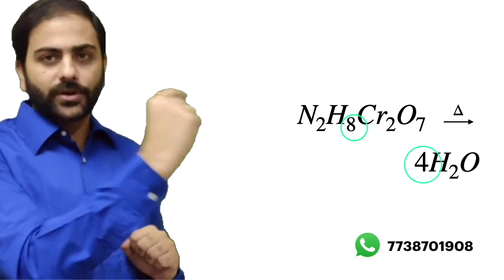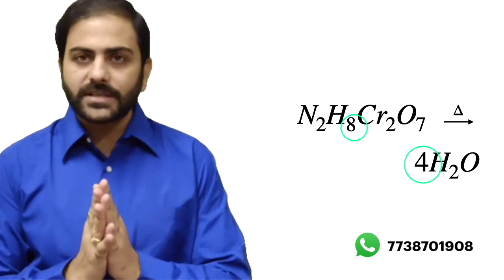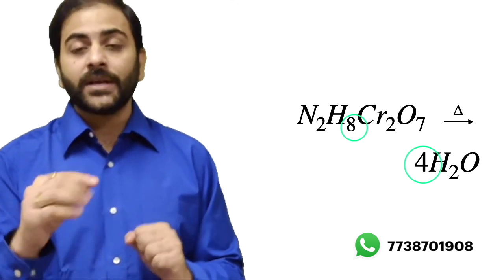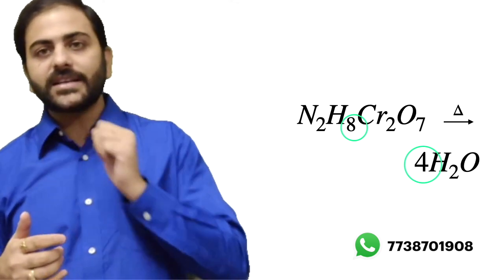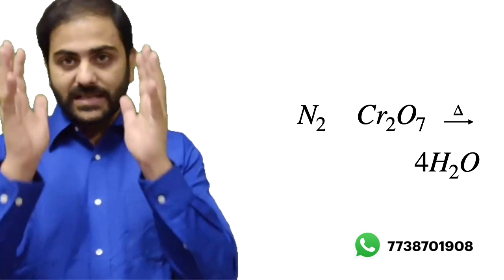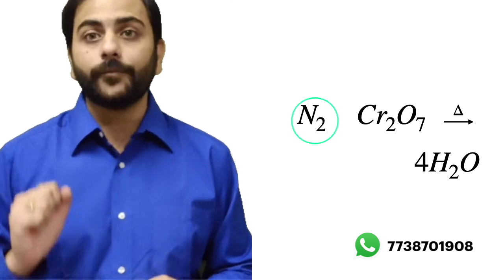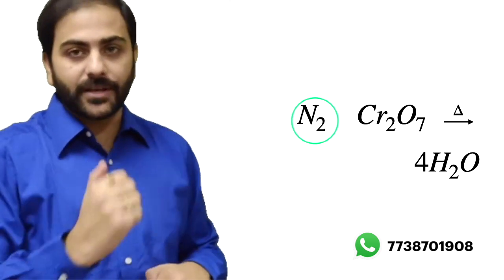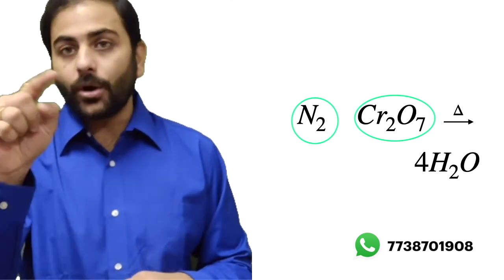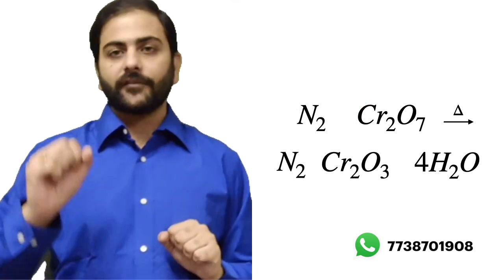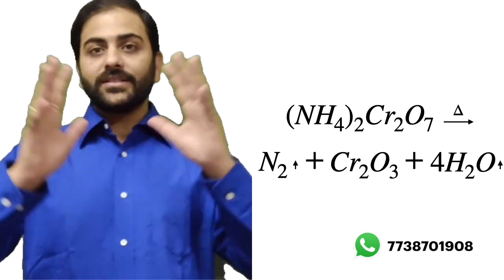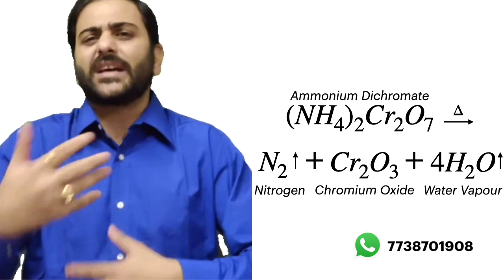From H8, we can remove 4 water molecules (4H2O), which uses 4 oxygens. The reactant side had 7 oxygens, so 7 minus 4 leaves 3 oxygens. Two nitrogen atoms combine to give N2. The remaining Cr2 and 3 oxygens give Cr2O3. So the products of ammonium dichromate on heating are: N2 gas, Cr2O3, and 4H2O.